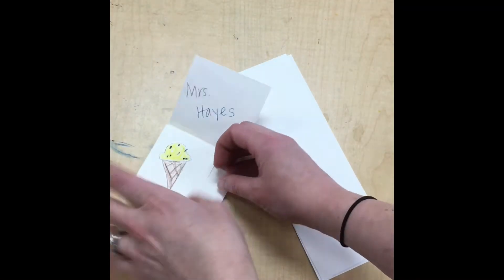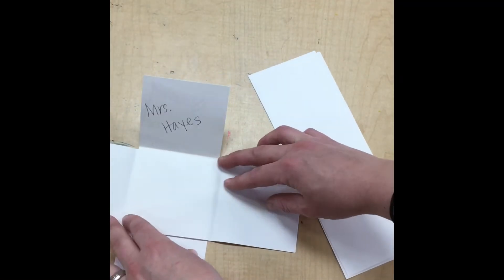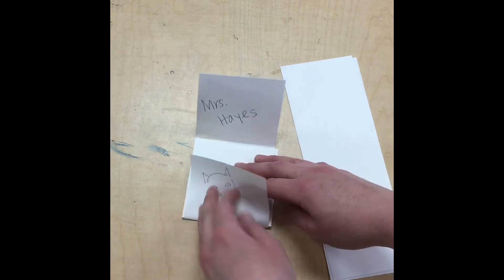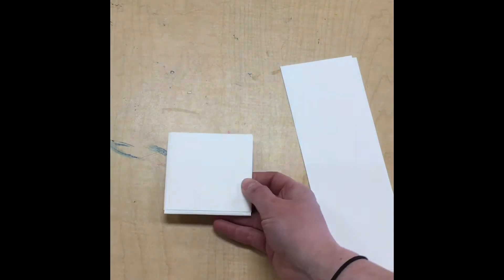Today I'm going to show you how to make a crisscross book, which is made out of two pieces of paper, and it can be folded up in any different order of ways.